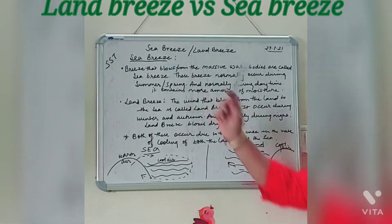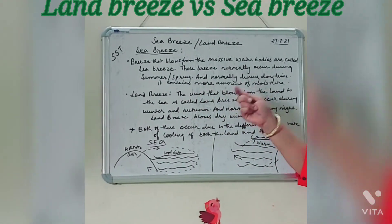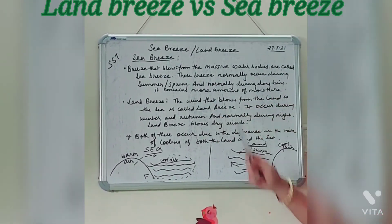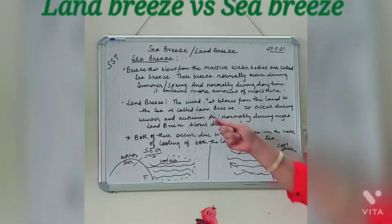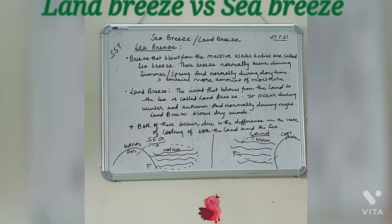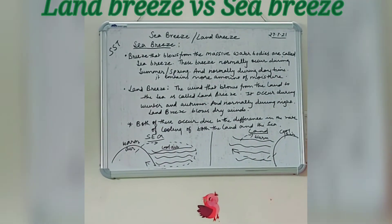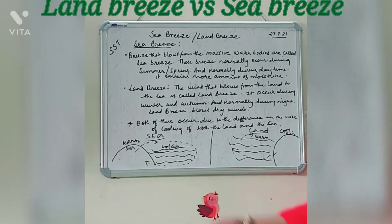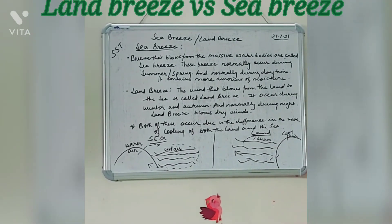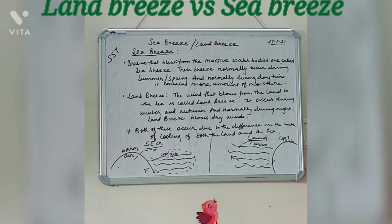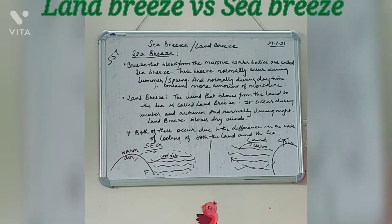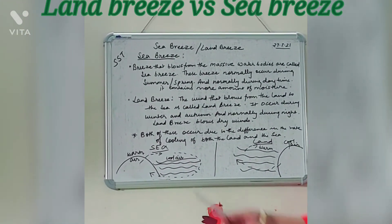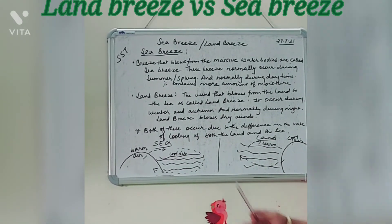Sea breeze is the breeze that blows from massive water bodies towards the land. It normally occurs during summer or spring and during daytime, and it contains a higher amount of moisture. Now let me explain sea breeze with the help of this diagram. During the daytime, the warm air of the land rises up — just as when we boil water on a stove, the steam rises up.